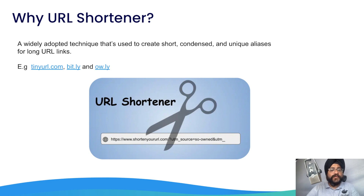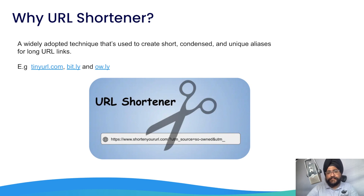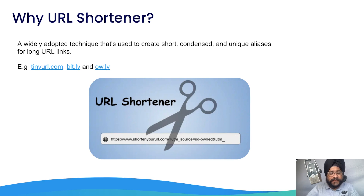Why are URL shortener techniques so popular? First, the URL shortener technique allows you to create a short URL which is easy to understand, easy to remember, and easy to manage. For example, if you have a brand name, a short URL might consist of a snippet of your company name, which is easier to identify. Second, there may be cases where you have oversized or hard-to-guess URLs — think of URLs that contain UTMs, which might look too suspicious or clunky. URL shorteners can be helpful in such cases.